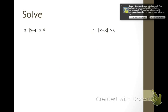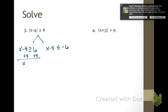Number 3, same thing — we're going to set up our two equations. If x minus 4 is greater than or equal to 6, and x minus 4 is less than or equal to negative 6. Add 4 over on both sides.